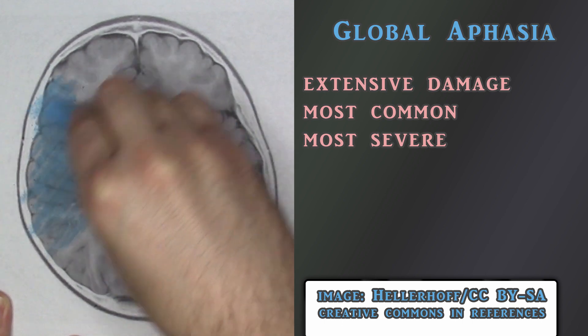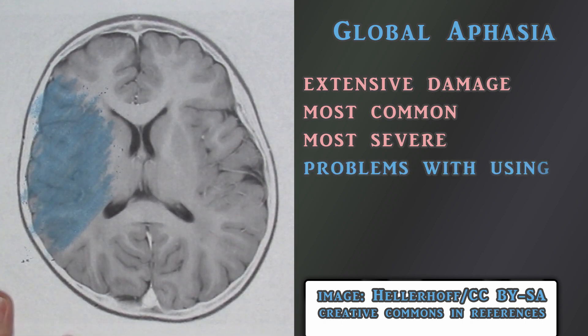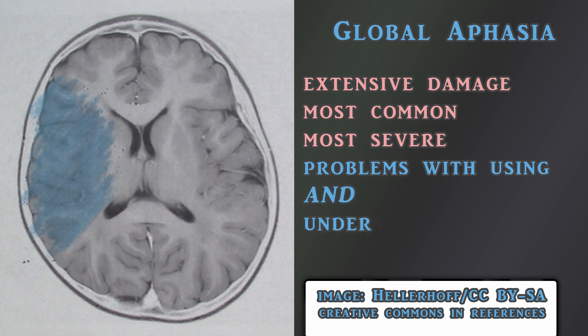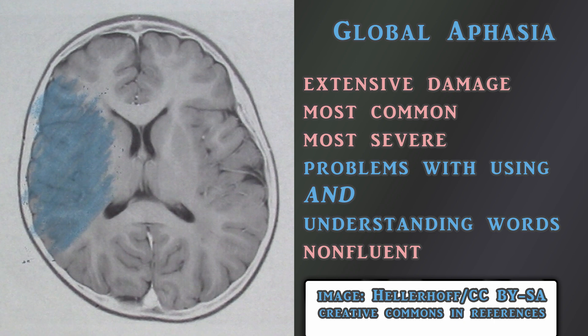The most common and severe type is called global aphasia. People with global aphasia lose the ability to choose and use words without great effort, and also lose the ability to understand the words used by others. It is a disfluent aphasia, with the most severe cases having all language skills disrupted to the point that they can only communicate using facial expressions and basic gestures.